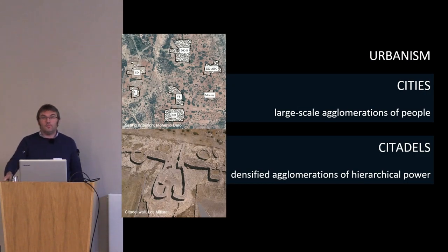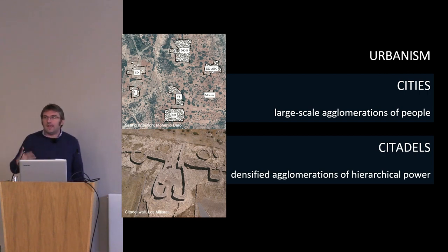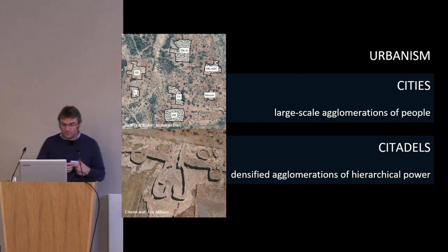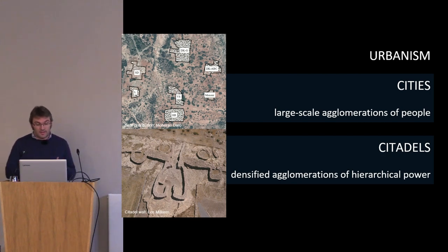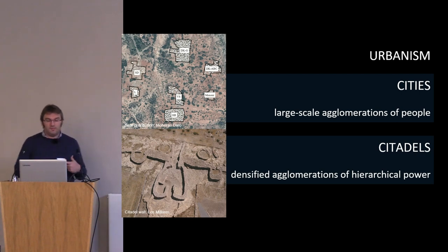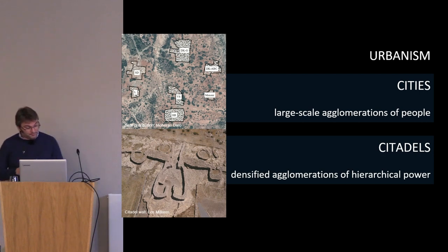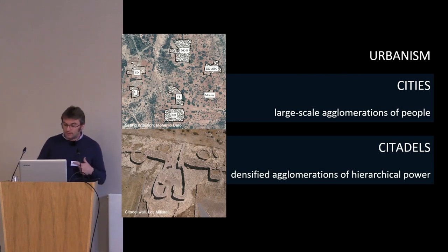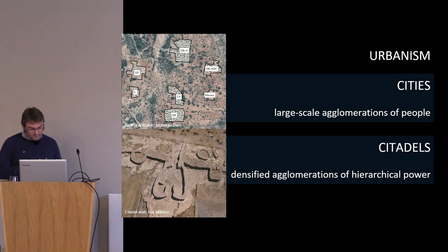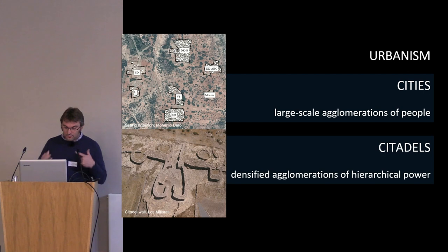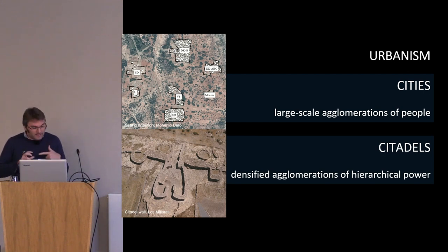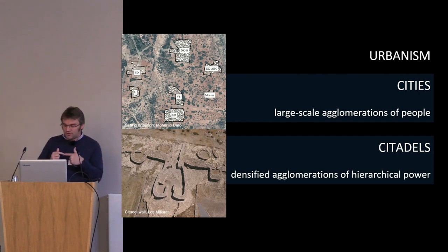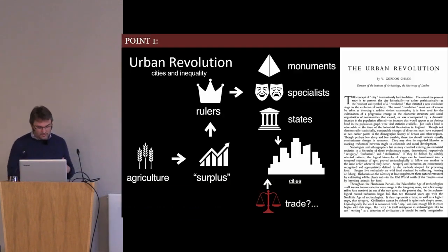Finally, urbanism. We concur with many perspectives presented in this session and highlight the tangled gymnastics we've gotten ourselves into trying to talk about urbanism and the requirement that cities display stratification. We see clear evidence that cities — large-scale agglomerations of people, whether along the Dnieper, Euphrates, Indus, or Niger — were actually places of relatively low inequality and high growth. Instead, we argue that archaeologically visible stratification rose first in what we call citadels — densified agglomerations of hierarchical power — created from low-growth economic dynamics. It's only later that some cities became citadelized, and it's this citadelized version that Childe bequeathed us.